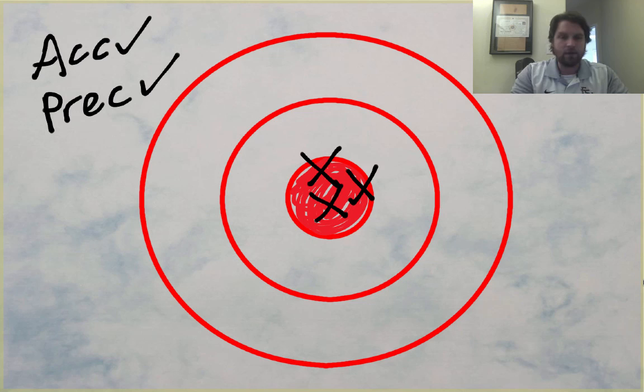So accuracy and precision. Accuracy is hitting the mark of what you want to hit with your data. Precise, precision is having a tight grouping of those data points. So that's pretty much it.